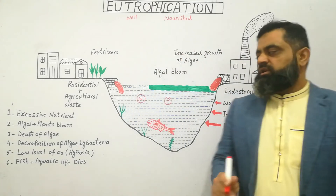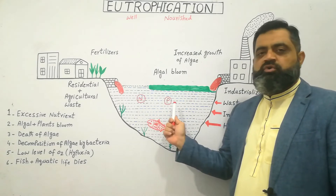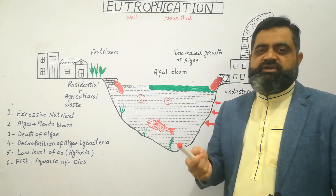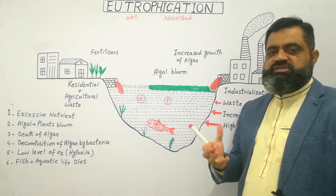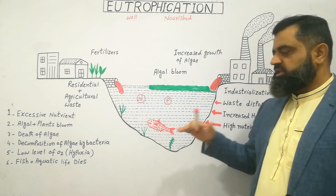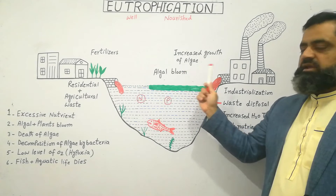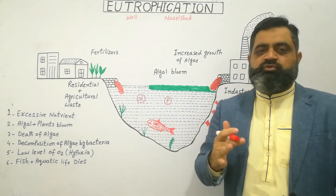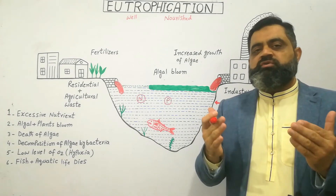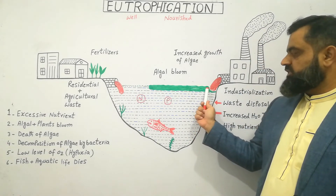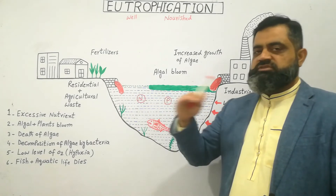What is eutrophication? When a water body receives too many nutrients like nitrates, phosphates, and carbon, these nutrients are taken up by algae, cyanobacteria, and aquatic plants, and they grow in enormous amounts. This increased growth of algae causes an algal bloom. As you can see in the diagram, this whole lake has been covered by green algae on the surface.